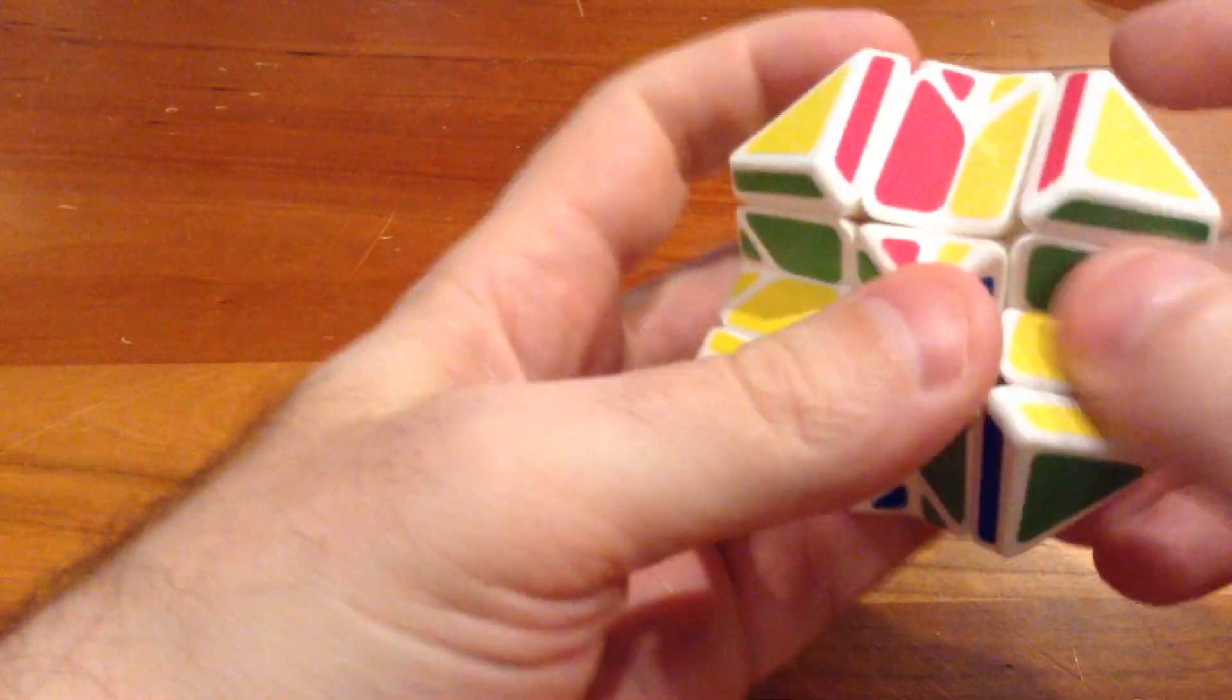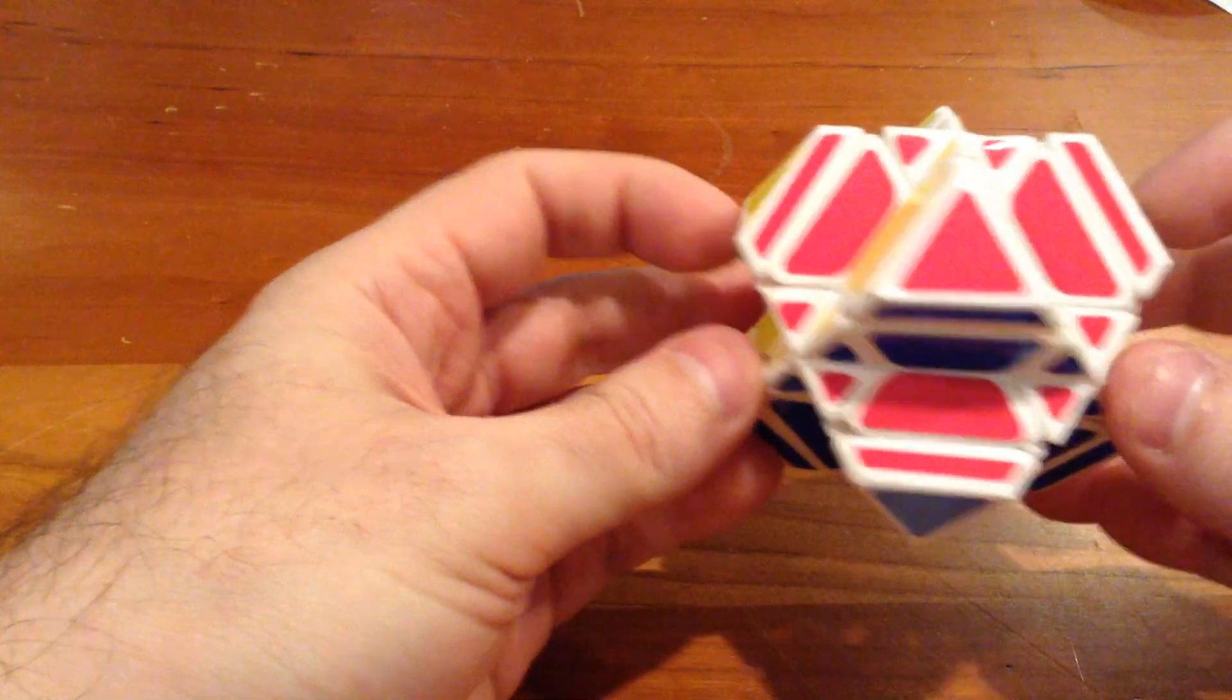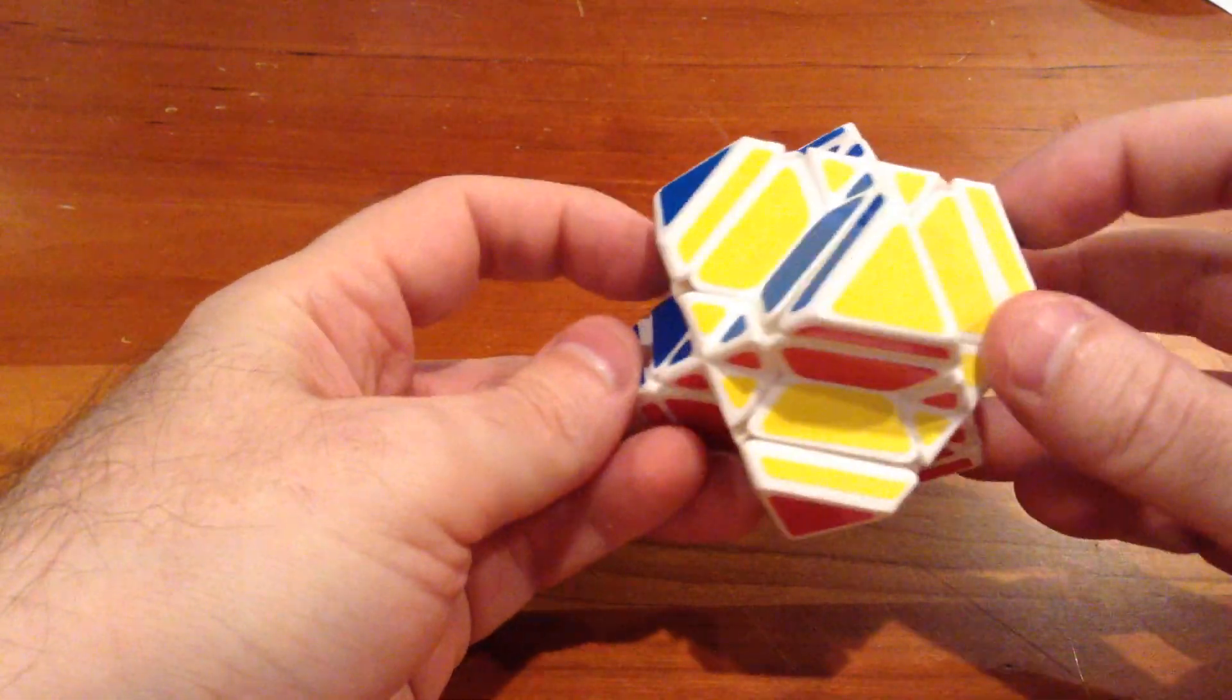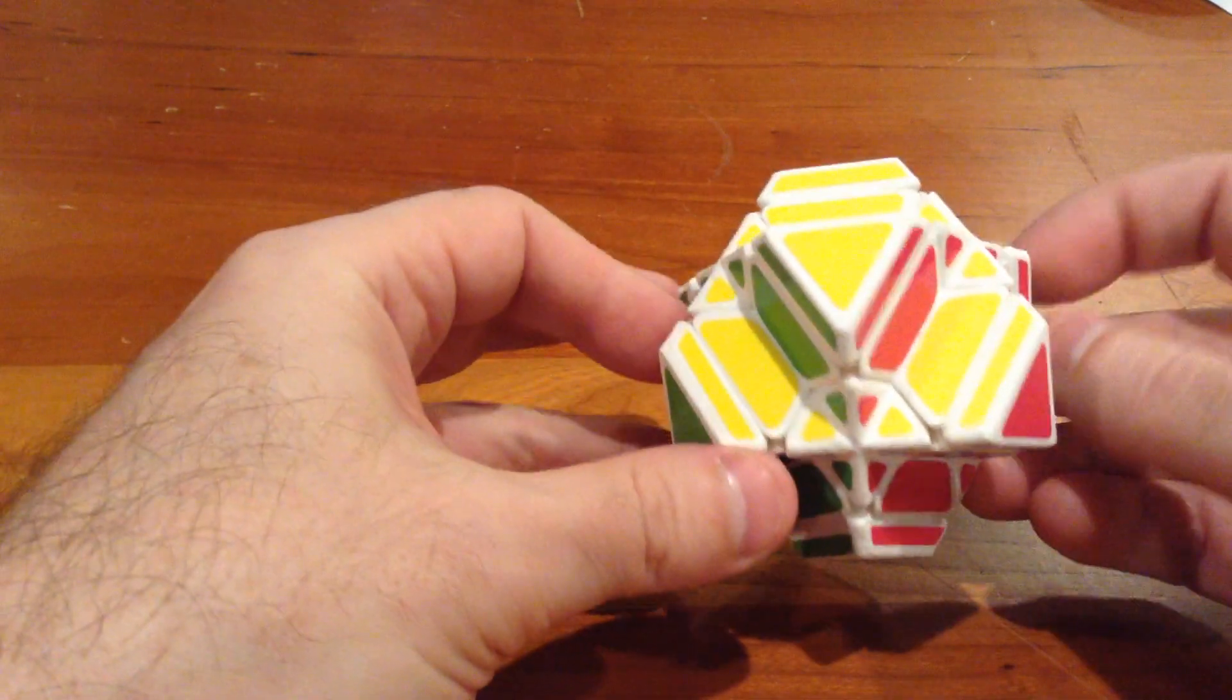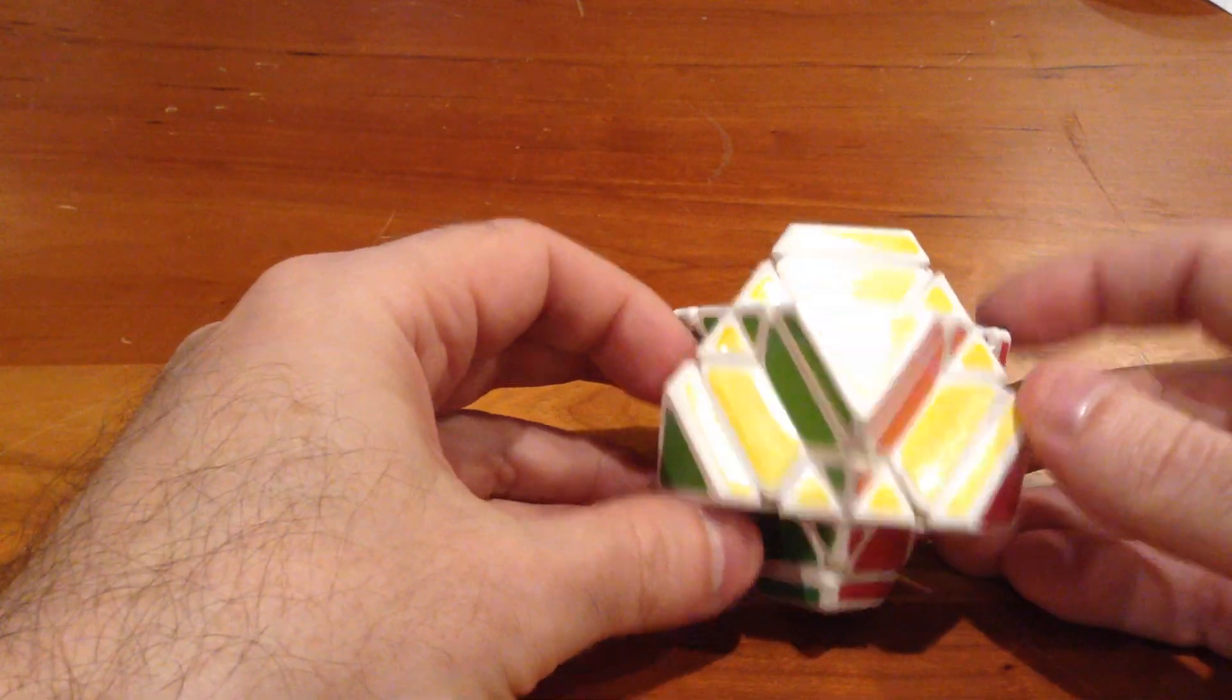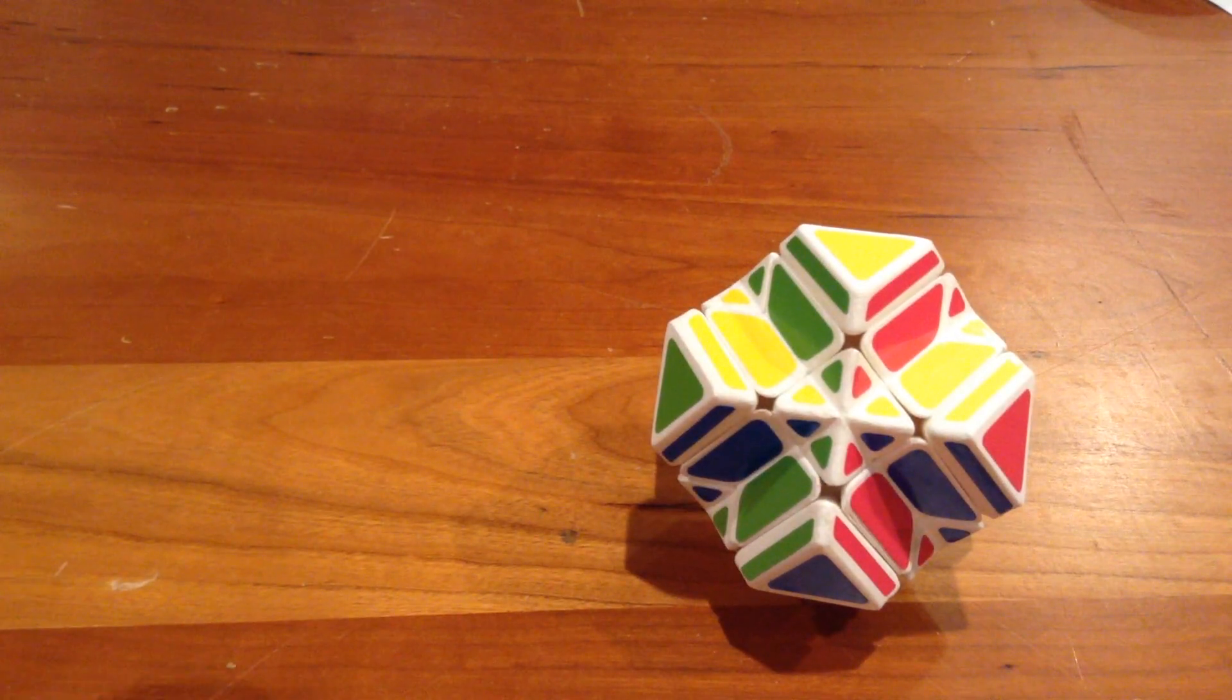And at this point, we have solved the truncated dueling tetra. There you go. I hope you enjoyed the video. Feel free to leave comments down below. Thank you.